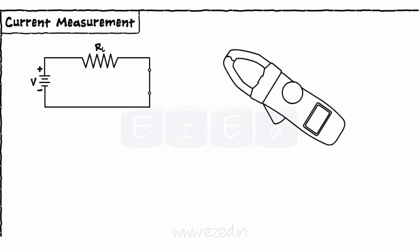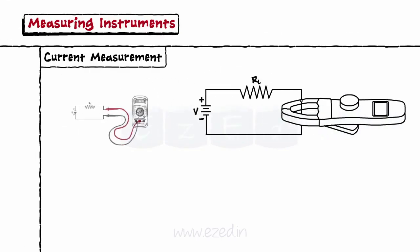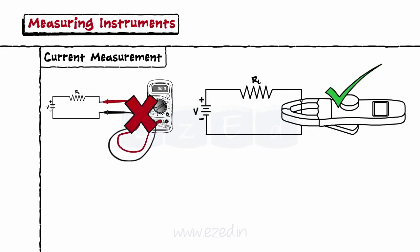This clipper is clipped to the wire whose current is to be measured. Thus, there is no need to connect any meter in series by opening the circuit.